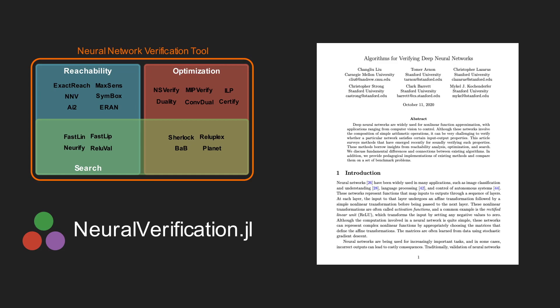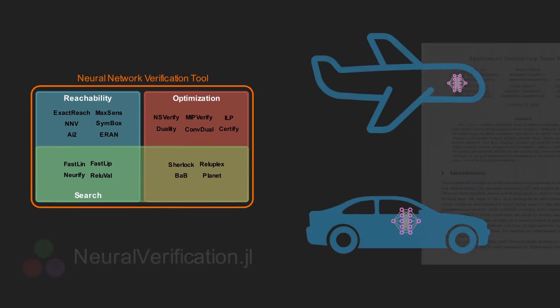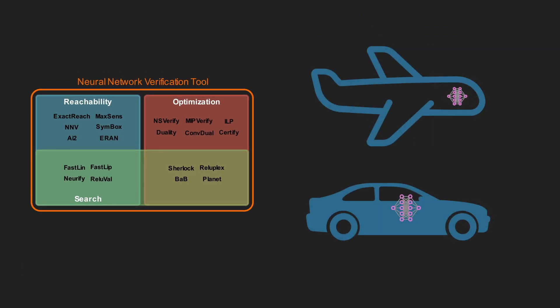Neural network verification is very much still an active area of research, and we continue to try to make these tools more efficient and scalable so that they can play a role in making sure the autonomous systems of the future will be safe.